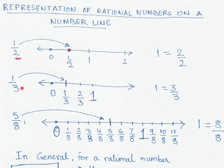You can extend the same logic if asked to represent 1/3. You have to represent one part out of three parts. So the distance from zero to one is divided into three equal parts. The first point is one part out of three, the second is two parts out of three, and one itself is three parts out of three, or 3/3. So we highlight the first point as 1/3 on the number line.